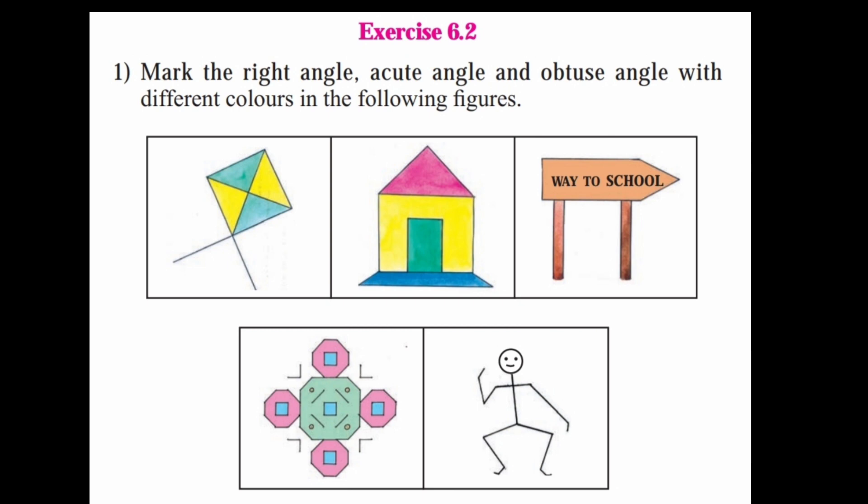Next, we will see exercise 6.2, first question: mark the right angle, acute angle, and obtuse angle with different colors in the following figures. In the first figure, mark the right angles in red. Now mark the acute angles in blue ink. There are 4 acute angles identified. The total right angles in the triangle are also noted.